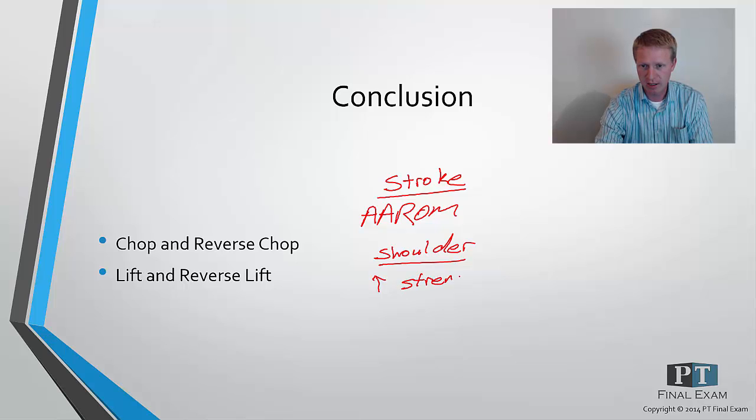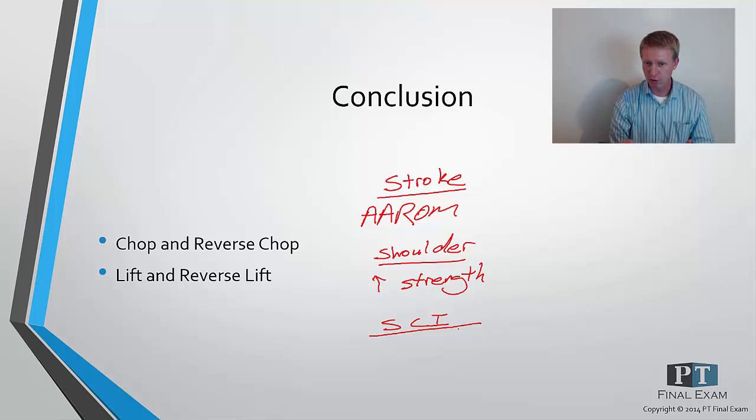And then the other one to consider is that with some type of spinal cord injury, or other type of impairment where rolling isn't, where you can't roll or functionally roll very well in supine, basically the chop is going to be your best friend as you come from a reverse chop to a chop, you're going to rotate as you go into the full chop pattern. So you get the rolling function.